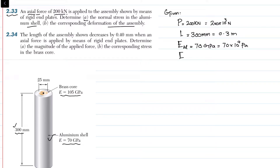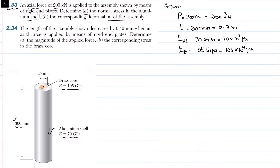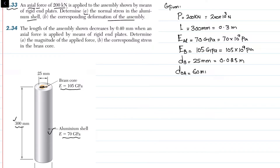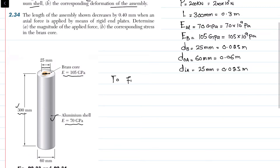Modulus of elasticity of brass is 105 GPa, equal to 105 × 10⁹ pascal. From the figure, the diameter of the brass core d_b is equal to 25 millimeter, that is 0.025 meter. The aluminum shell has outer diameter d_outer equal to 60 millimeter, which is 0.06 meter. The inner diameter of the aluminum shell equals that of the brass core: 25 millimeter, equal to 0.025 meter.